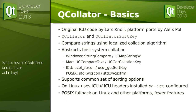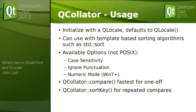QCollator is one that quite a few people have been wanting for a long time. Lars did a proof of concept and Alex Pole picked it up and implemented it. It compares strings using a localized collation algorithm, abstracting the host system — we don't implement it ourselves. This means we have to choose a subset of features to support across platforms. On Linux, please make sure you have the ICU headers installed to pick up ICU collation, otherwise you'll get the POSIX fallback which only does standard ASCII sorting.